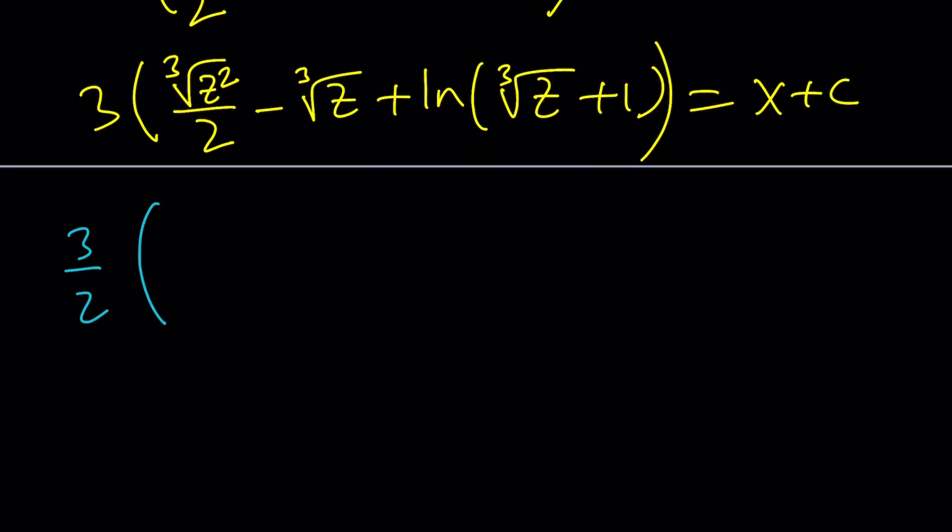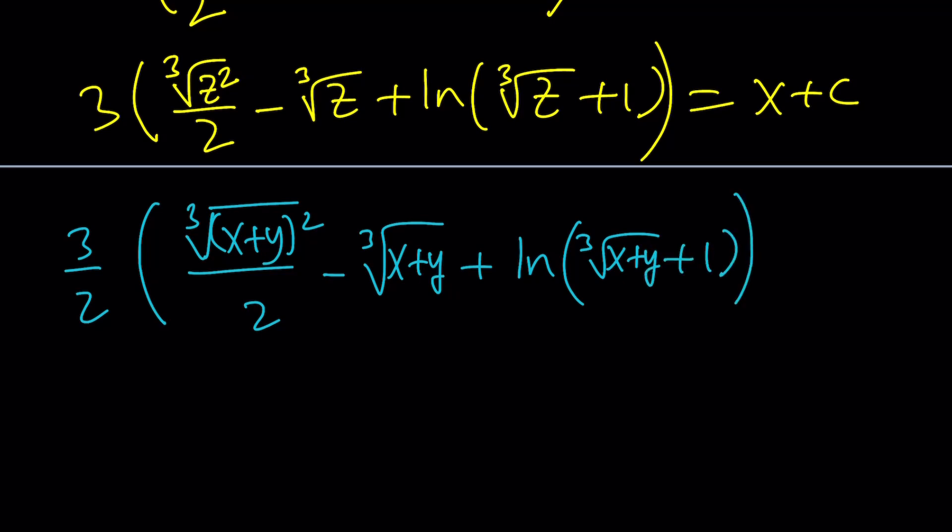Now, here's the fun part. We're going to go ahead and replace z with x plus y because that's what it is. Back substitute. It's going to be 3 times cube root of x plus y squared divided by 2 minus cube root of x plus y plus ln cube root of x plus y plus 1, and that equals x plus c. I mean, can you solve for x or y from here? I don't think so. It's pretty complicated. I don't think you could apply Lambert's W function on this one, but correct me if I'm wrong.